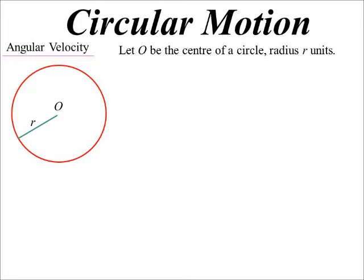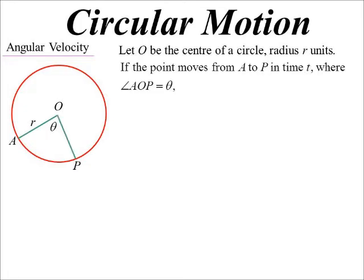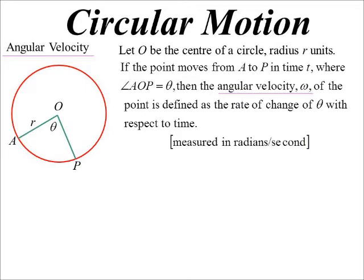Now if a point moves from A to P along the circumference, it will sweep out some arc. So the rate of change of that angle is the angular velocity of the particle. And so we usually measure it in radians, because we're going to end up using calculus on this, so radians per second. It doesn't have to be per second, but you'll find that's the most common one we end up with.